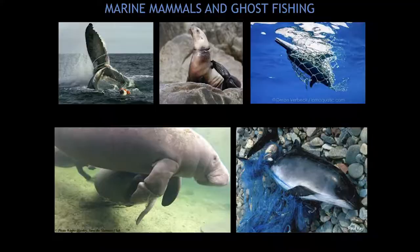For seals and pinnipeds, these animals were interacting with fishing gear mainly around the body and neck area, with very little interaction around the flippers. They were mainly interacting with nets. Their curious nature could be a key indicator as to why they were interacting with fishing nets, especially amongst juveniles.